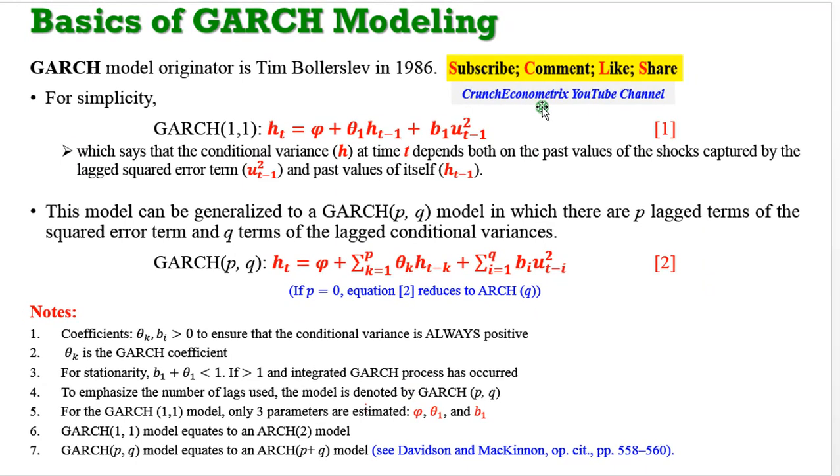In the first video, we said that the GARCH model was developed by Tim Bollerslev in 1986. For simplicity, equation 1 shows you a simple GARCH model, which is constructed as the conditional variance being a function of a constant term, a one-period lag value of its own series, and a one-period lag value of the squared error. This is how you construct a GARCH(1,1) model. It says that the conditional variance h at time t depends both on the past values of shocks captured by the lagged squared error term, and the past values of itself.